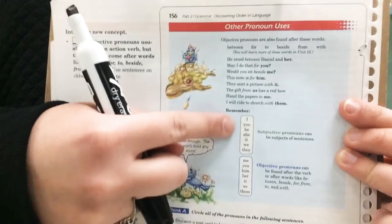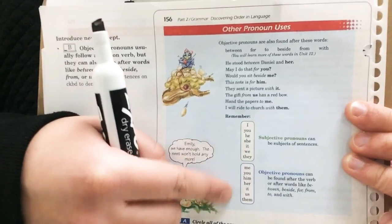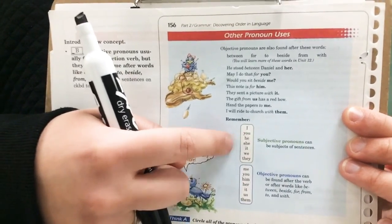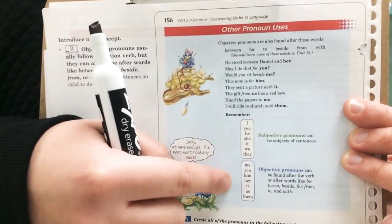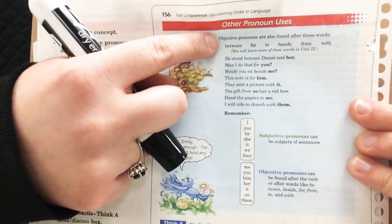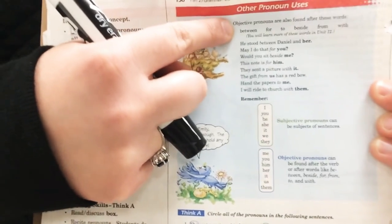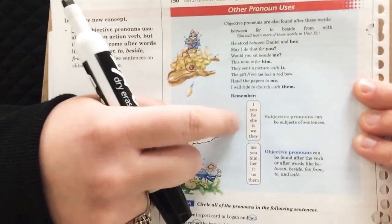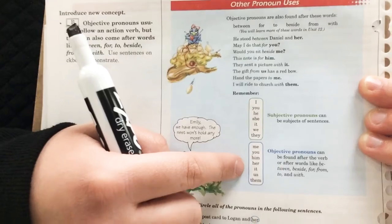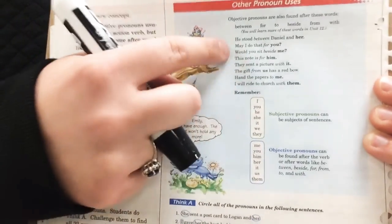Okay, so star and circle that one. Okay, these are your two lists. It would definitely be worth starring these as well so you know the difference between the subjective pronouns and the objective pronouns. Okay, and keep those for further use. So right here, the list of between, for, to, beside, from, within, and then your differences between subjective pronouns and objective pronouns. Okay, so these are the important things from this page.